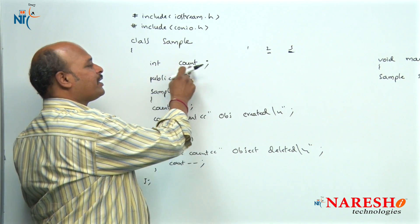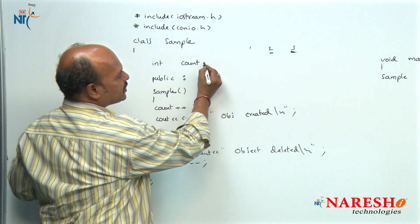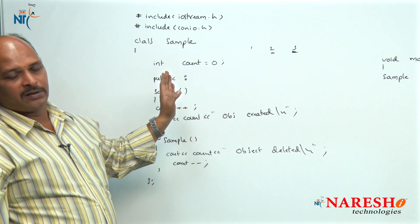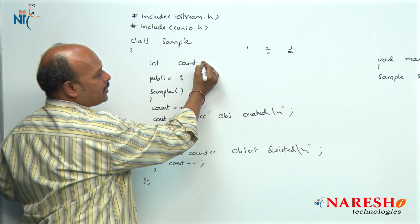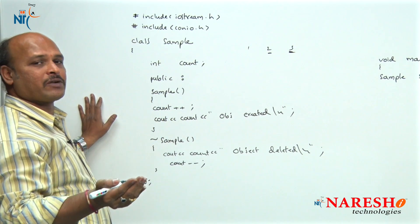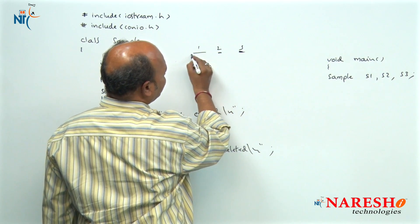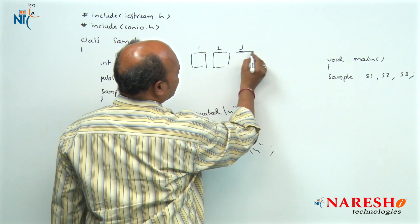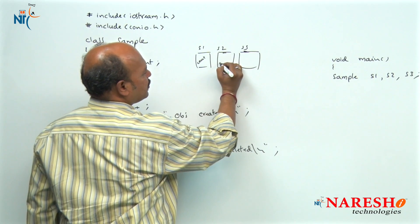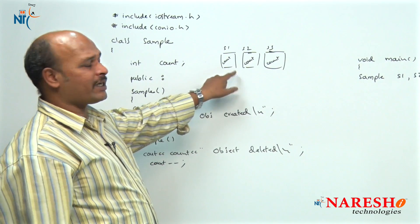Because 'count' is a local data member and it is not initialized. We know that class data members are not initialized here. Suppose we initialize count with 0 — now what happens? Every object's count first becomes 0. How many objects are created? Three objects. So s1, s2, s3 — each object is having its own 'count'. That means three separate counts are created.